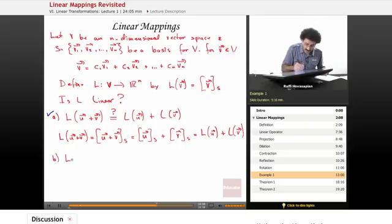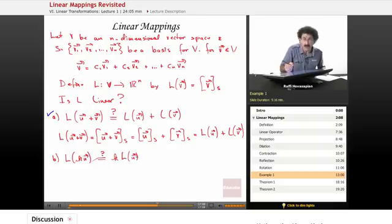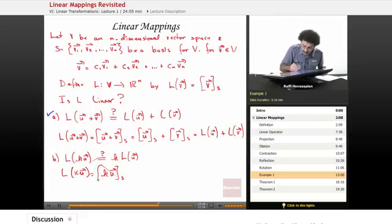We need to show that L of K times U equals K times L of U. Well, L of K times the vector U is equal to the coordinate vector of KU.